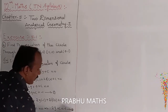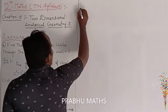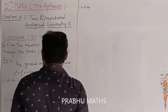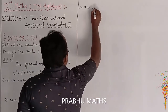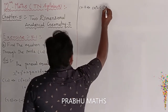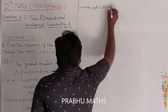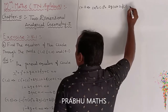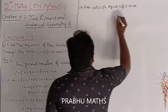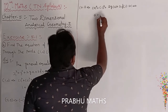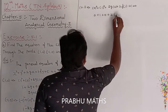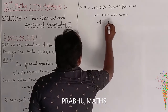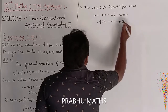Now going to the third equation. The third point is (0, 1). Substituting: 0 squared plus 1 squared plus 2G into 0 plus 2F into 1 plus C equals 0. Simplifying: 0 plus 1 plus 0 plus 2F plus C equals 0, so 2F plus C equals minus 1. This is equation number 3.